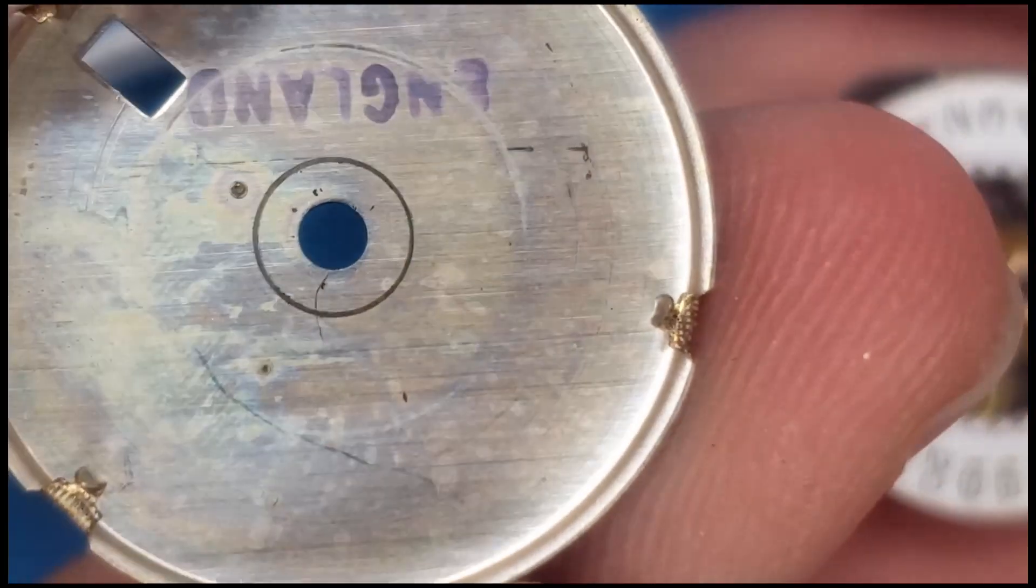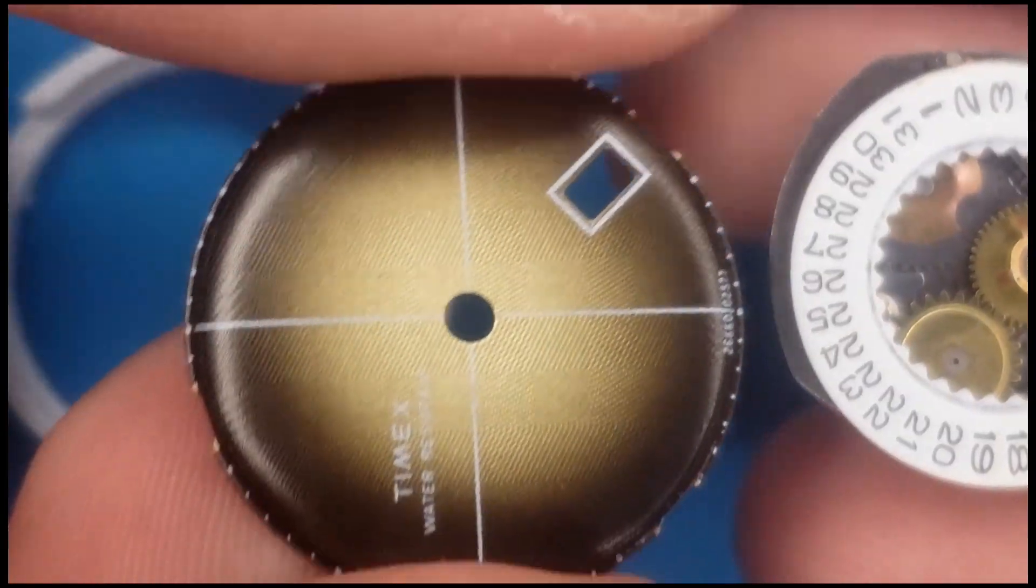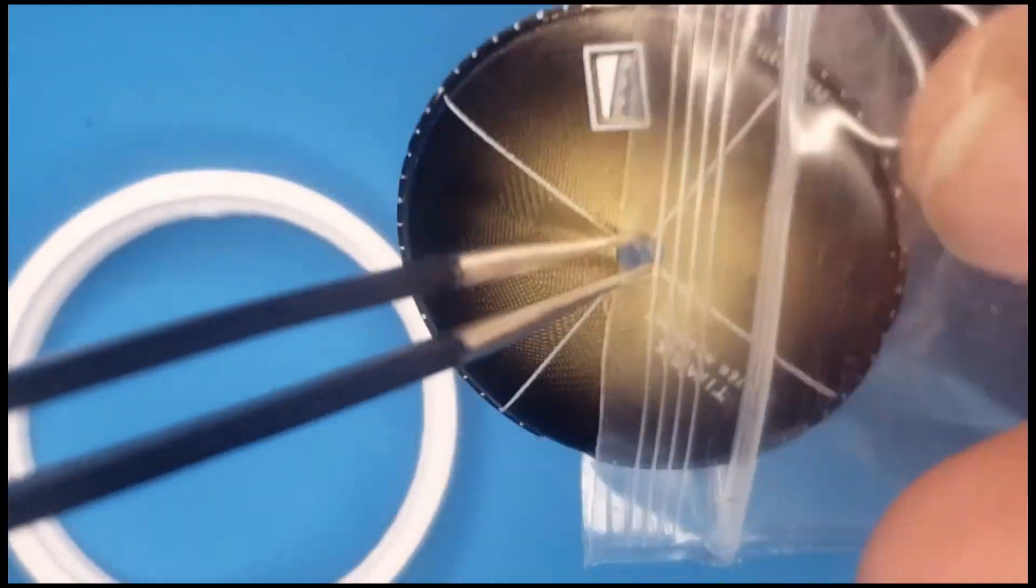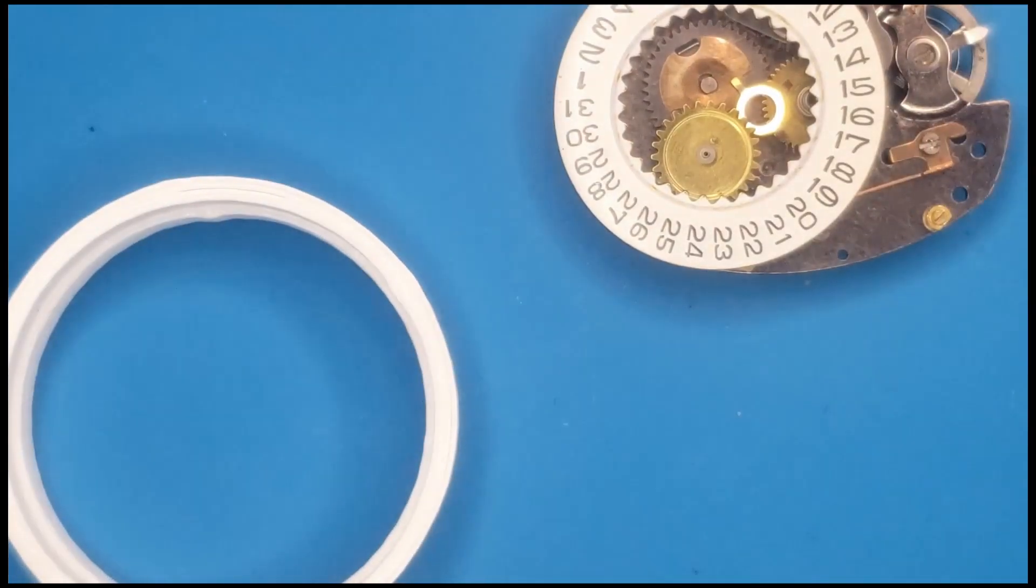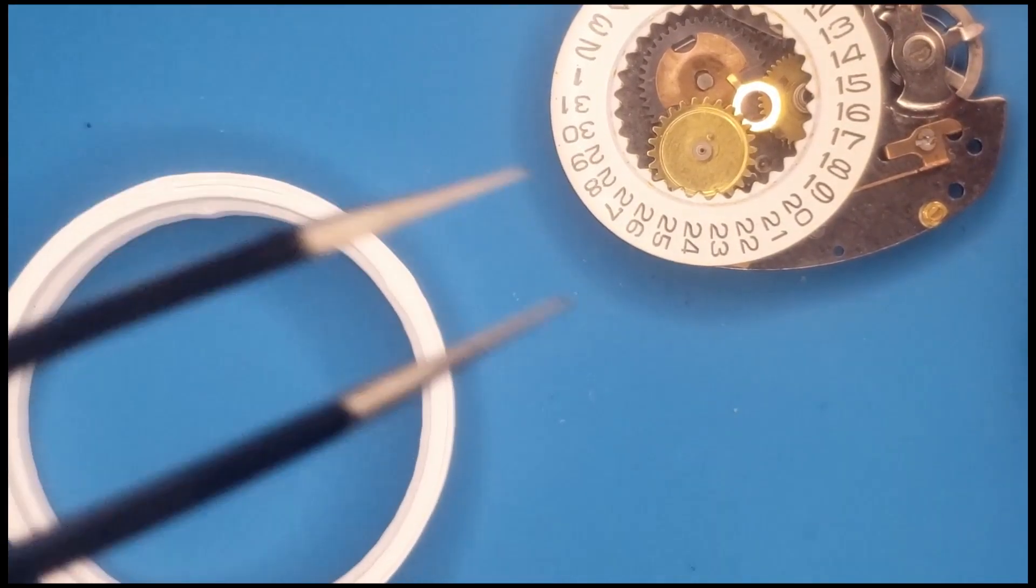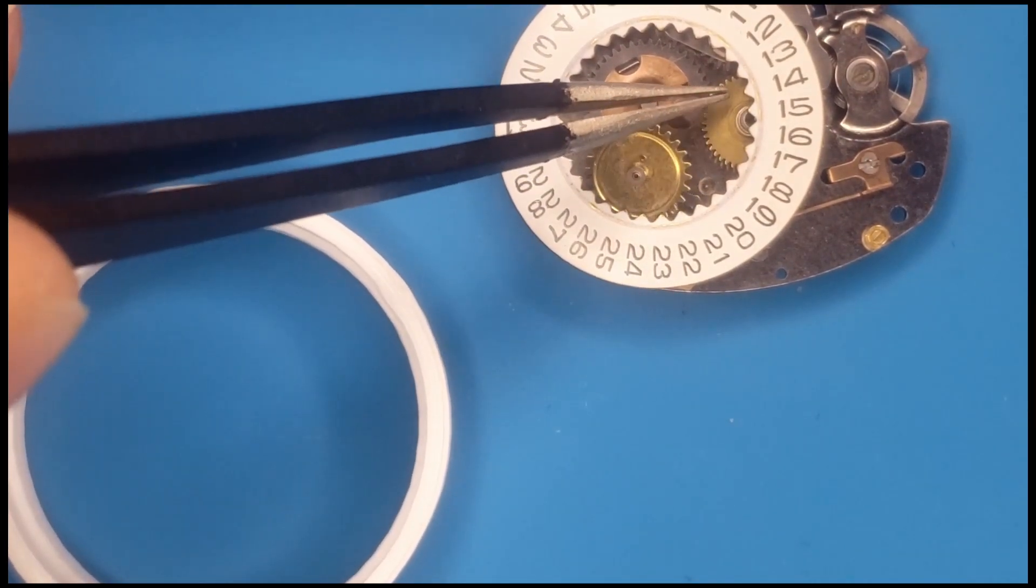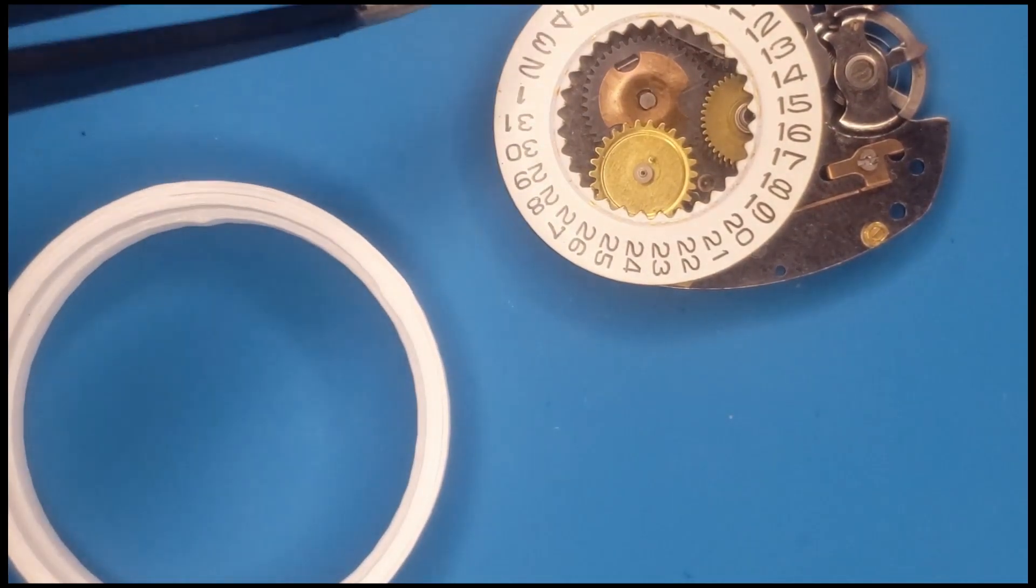So there's the date application. That's the back of the dial. It says England. That was neat. And because I'm clumsy, we'll just put that in there for safe keeping. So just pull out the dial washer. Pull out the minute wheel.